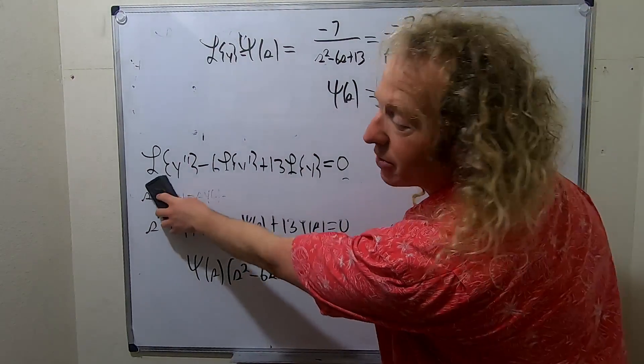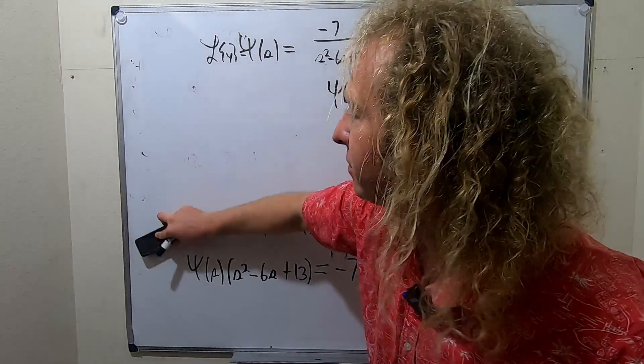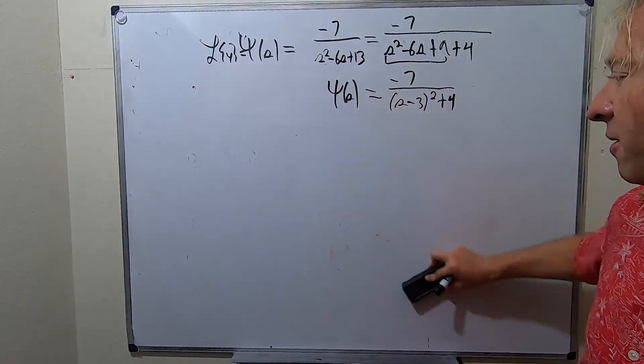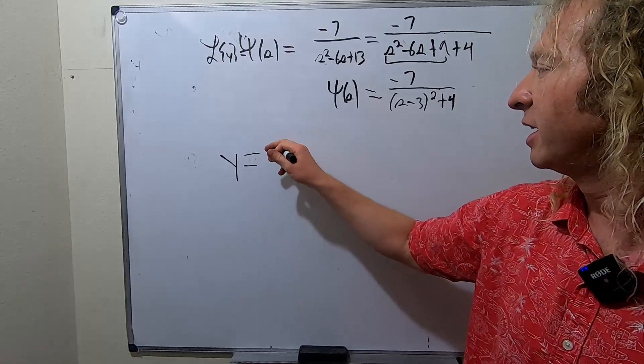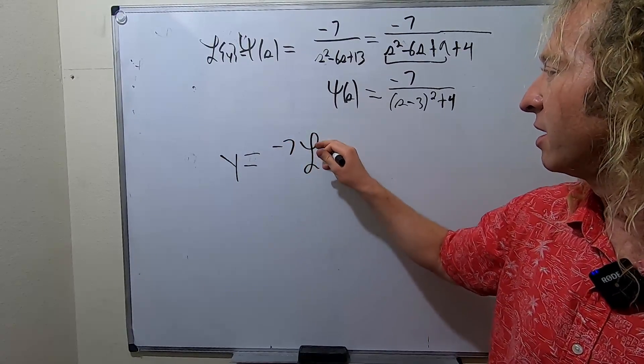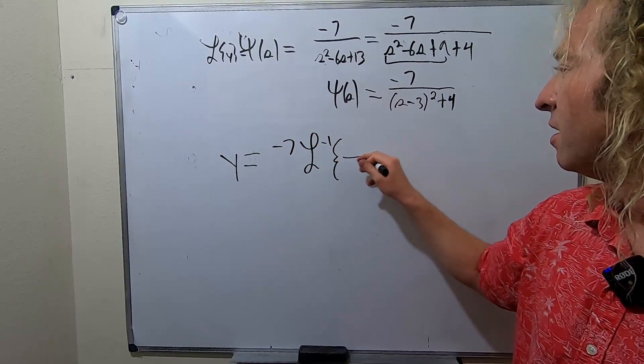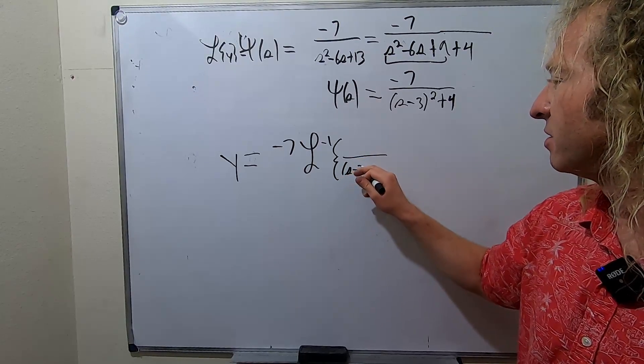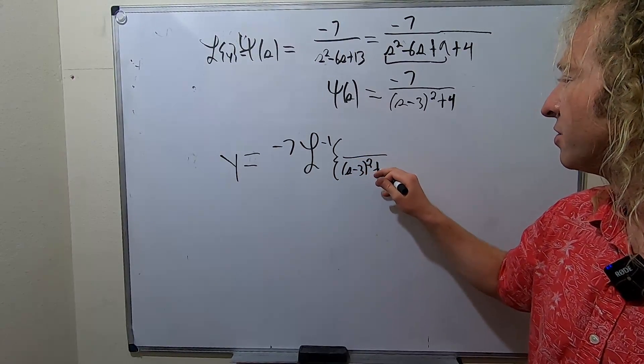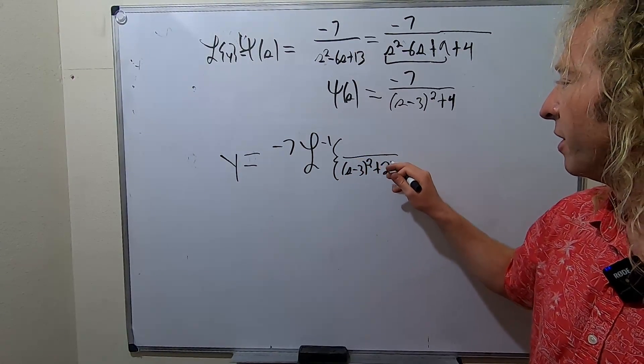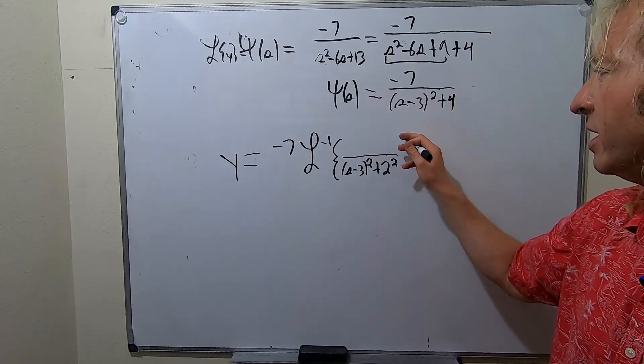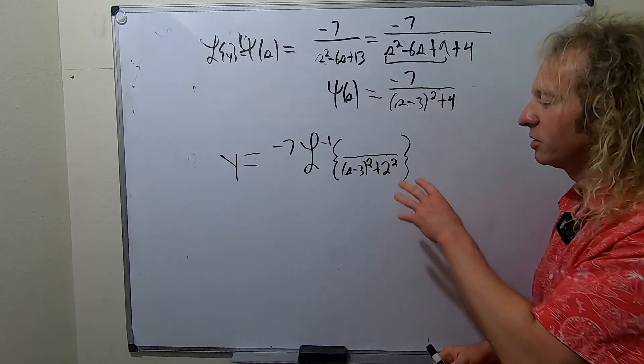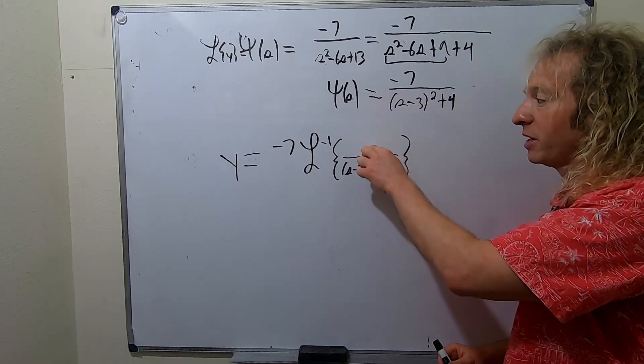So y is going to be the inverse Laplace of all of this stuff. So let's go ahead and write that out. So y is equal to, let's pull out that negative 7. Inverse Laplace. So then we have this, S minus 3 squared plus 4. I want to write the 4 as 2 squared. So I pulled out the negative 7 and I haven't written anything here yet. So you'll notice that this almost looks like, there's a 1 here.